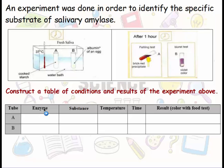We name the columns enzyme, substance, temperature, time, and result. We write color with food test. We start filling the table, first the enzyme. In tube A and B there are salivary amylase because the enzyme in saliva is salivary amylase. The substance added in A is cooked starch and B is egg albumin.